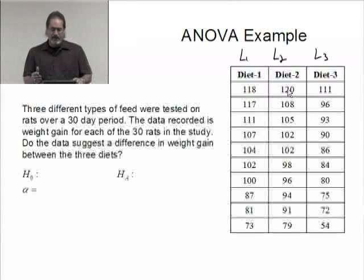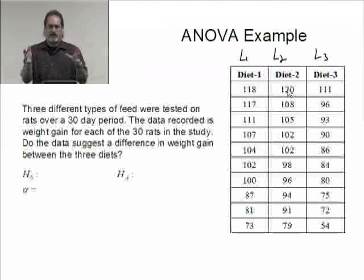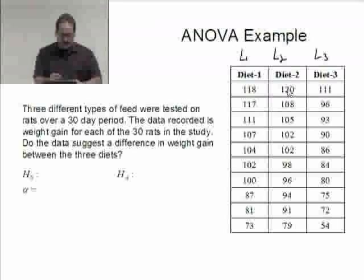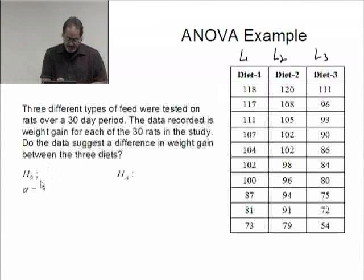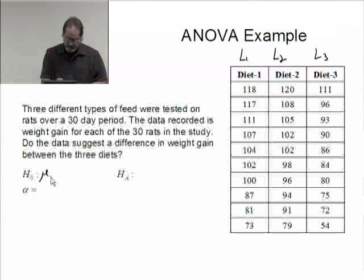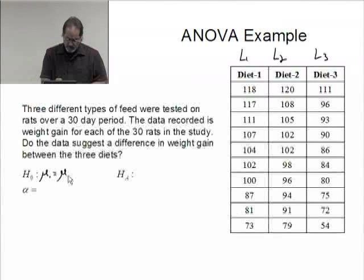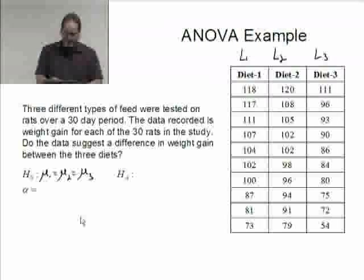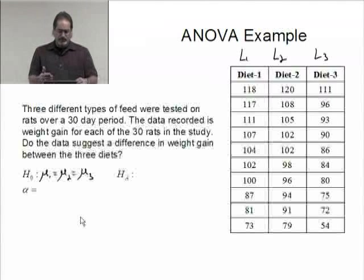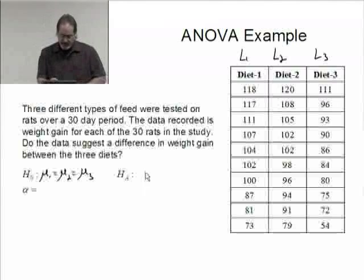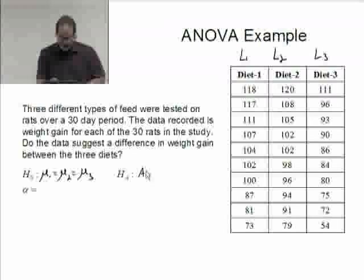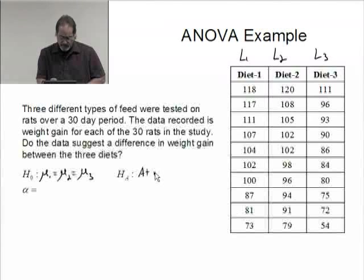The null hypothesis would be a statement that they're all the same, that there's no difference between the three. To do that I would say that the mean from the first diet is going to be equal to the mean of the second diet, which is equal to the mean of the third diet. That's a statement that there's no difference between the three diets.